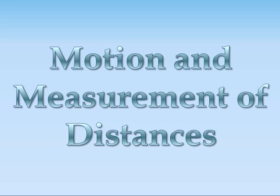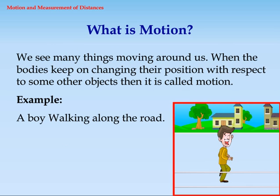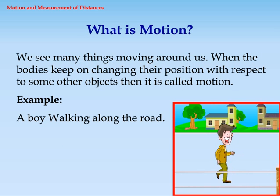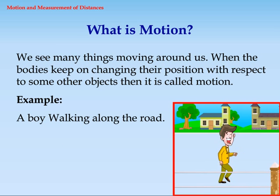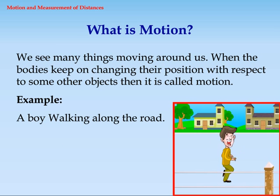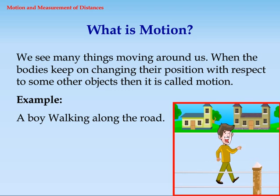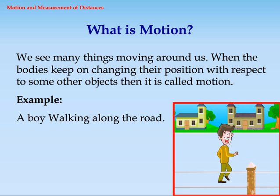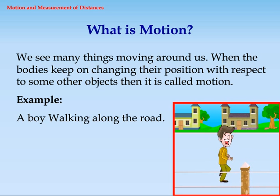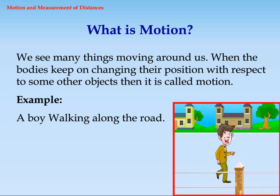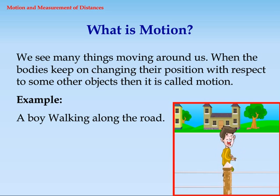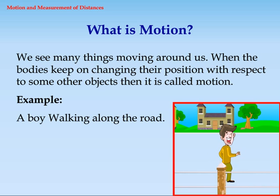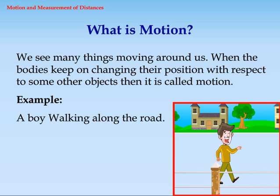Topic: Motion and measurement of distances. What is motion? We see many things moving around us. When bodies keep on changing their position with respect to some other objects, then it is called motion.